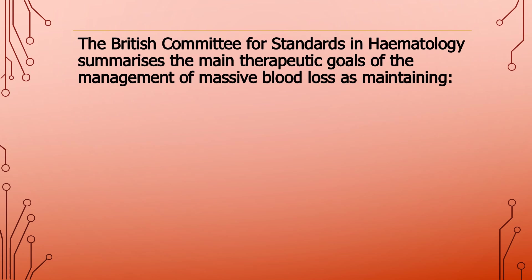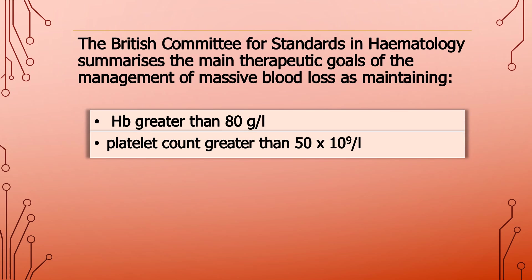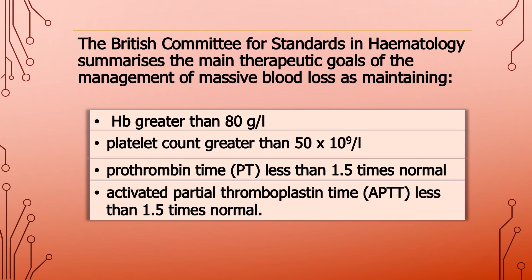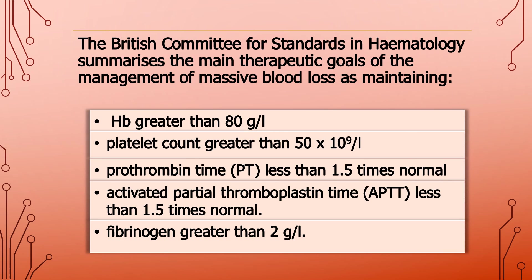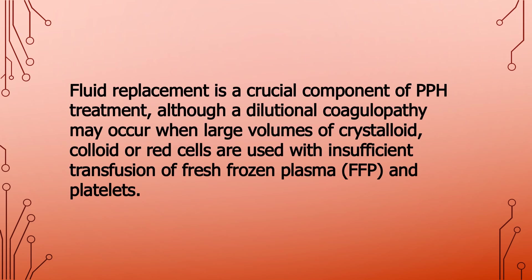The cornerstones of resuscitation during PPH are restoration of both blood volume and oxygen-carrying capacity. Volume replacement must be undertaken on the basis that blood loss is often underestimated. The British Committee for Standards in Haematology summarizes the main therapeutic goals of managing massive blood loss as maintaining: hemoglobin greater than 80 grams per liter; platelet count greater than 50 × 10⁹ per liter; prothrombin time less than 1.5 times normal; activated partial thromboplastin time less than 1.5 times normal; and fibrinogen greater than 2 grams per liter.